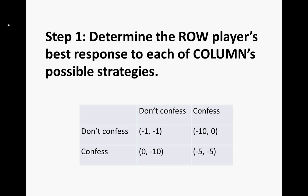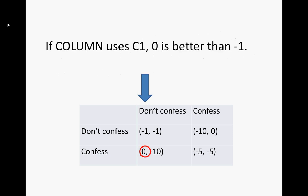I'm going to use the example of Prisoner's Dilemma to illustrate another method of finding a Nash equilibrium. Our first step is to determine the row player's best response to each of Column's possible strategies. Column has two possible strategies: in Column 1, not confess, or in Column 2, confess. Considering Column 1, Row's payoffs would be negative 1 or 0. The better one is the bigger one: 0.